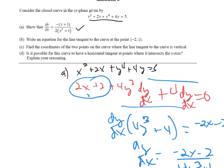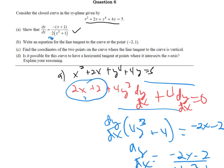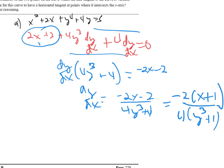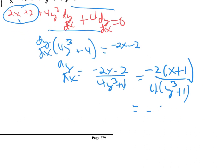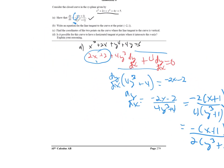That doesn't look the same as the given answer because they factored out a negative 2 from the numerator and a 4 from the denominator. Factoring out negative 2 gives negative 2 times (x plus 1), and factoring out 4 gives 4 times (y cubed plus 1). The 2 and 4 cancel, leaving dy/dx equals negative (x plus 1) over 2(y cubed plus 1). Double-checking — yes, perfect. That's 3 points.